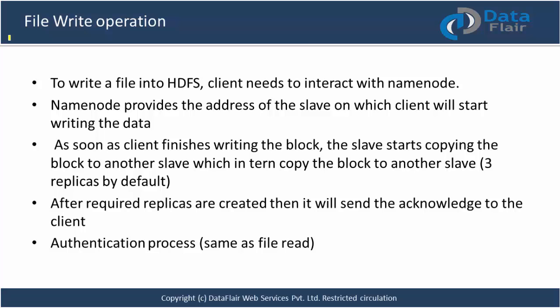For a file write operation, the first step is the same - the client needs to interact with the name node. The name node is the centerpiece of the cluster and stores the metadata, having complete information about the cluster data as well as slaves. Writing is also parallel and distributed. The name node will provide the address of the slave on which the client will start writing the data directly on that data node.